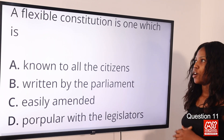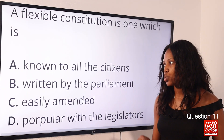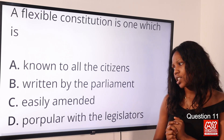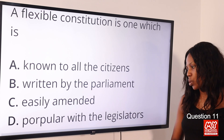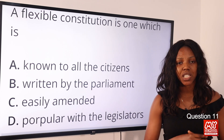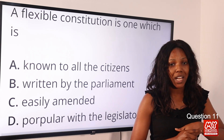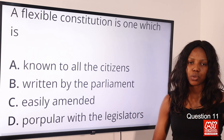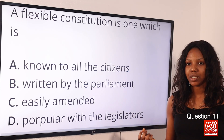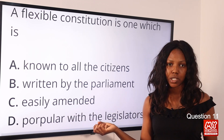Question 11: A flexible constitution is one which is — option A: known to all citizens; option B: written by the parliament; option C: easily amended; option D: popular with the legislators. The answer is option C, easily amended. A flexible constitution is one that is amendable — it can be relatively easily amended, unlike a rigid constitution.